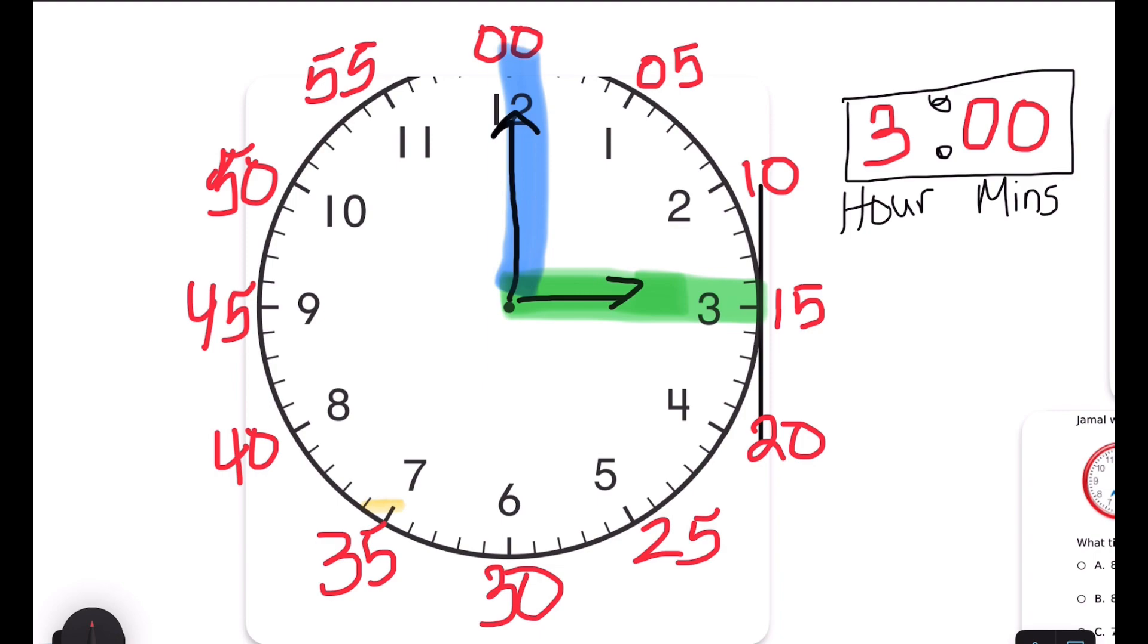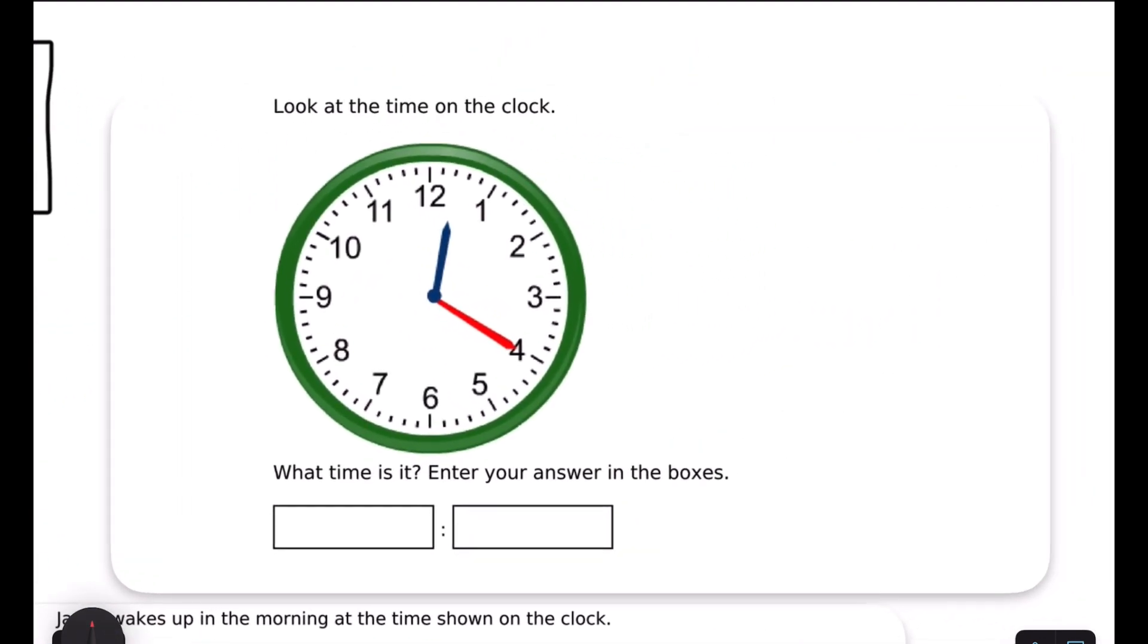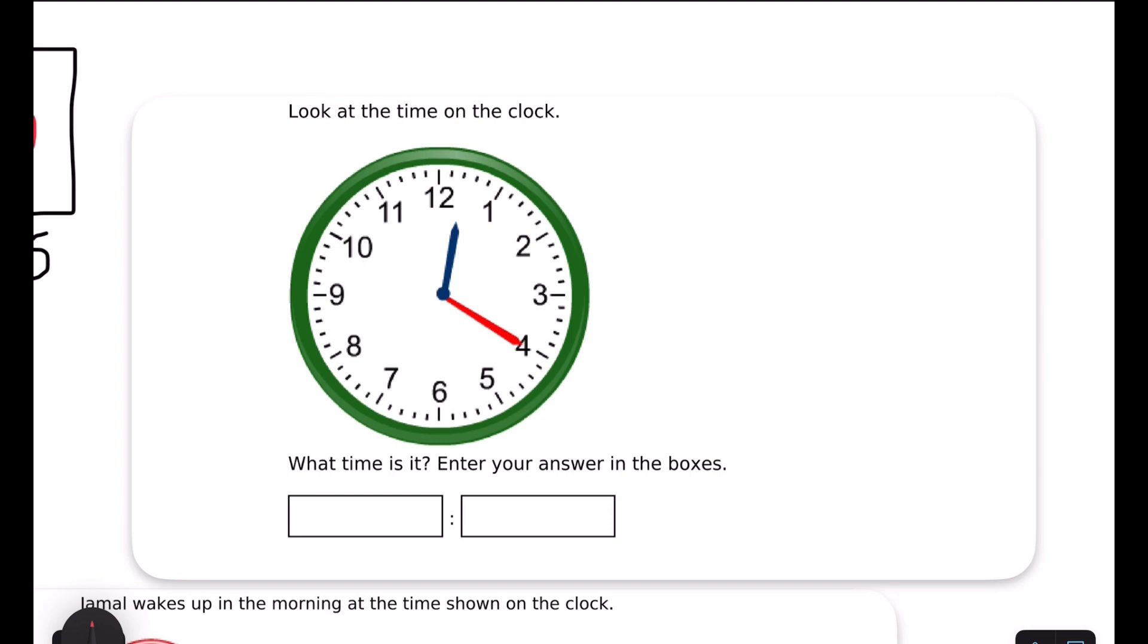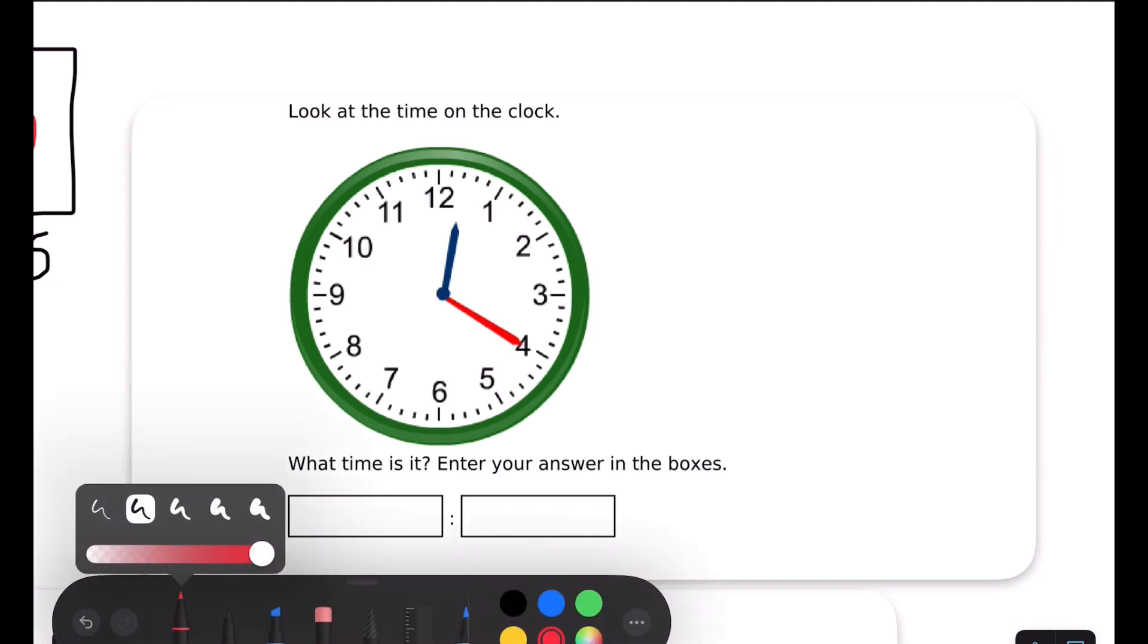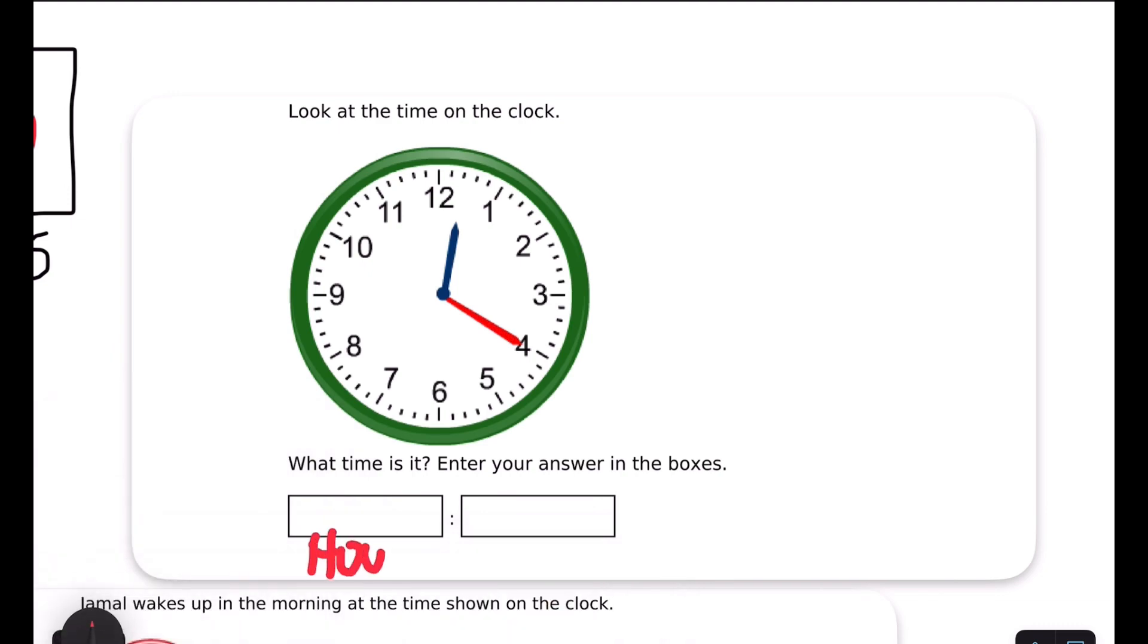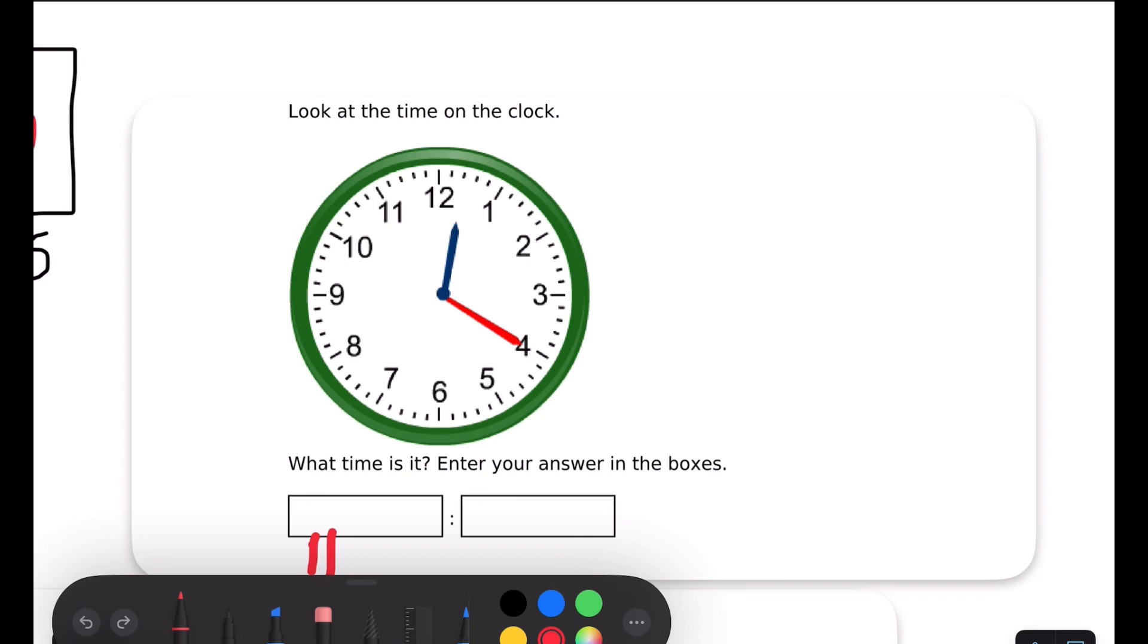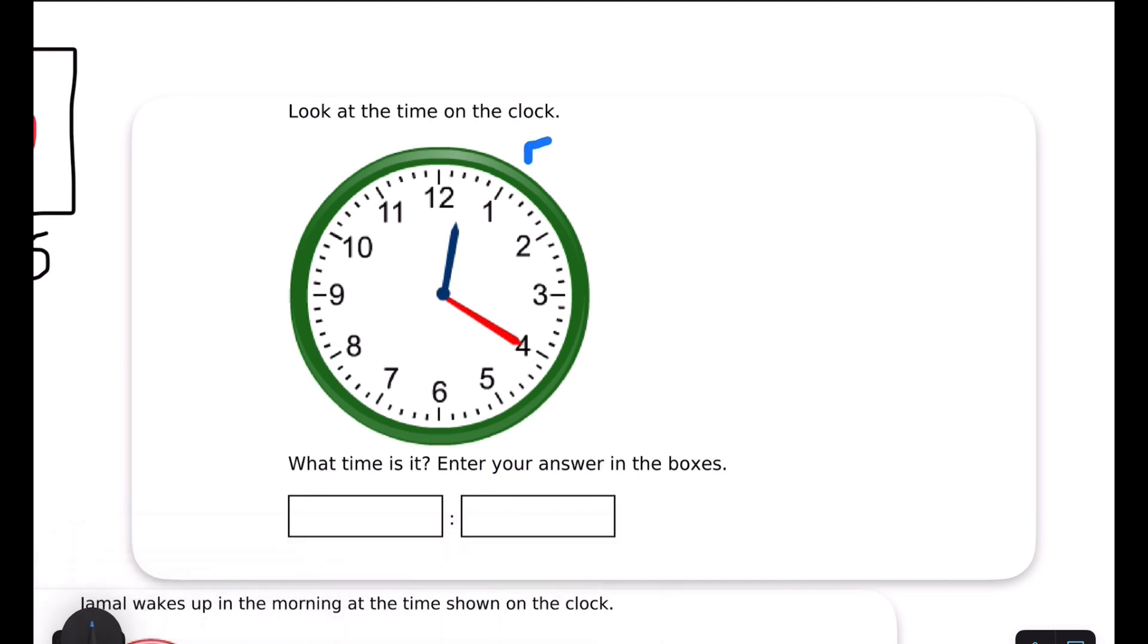Let's use that knowledge to answer some more questions. Look at the time on the clock. What time is it? Enter your answer in the boxes below. Again, this box would represent our hour and this box would represent our minute. Now let's go ahead and annotate our clock. I'm going to start off by writing 5, 10, 15, 20, 25, 30, 35, 40, 45, 50, 55, 60.